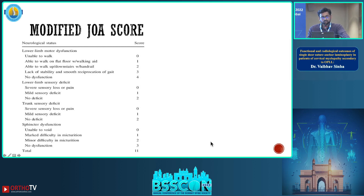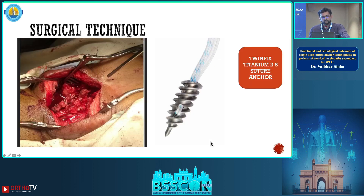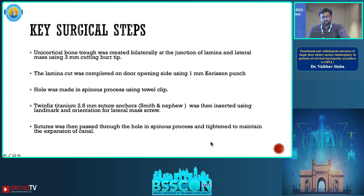In the surgical procedure, a twin fixed titanium 2.8 mm suture anchor was used to maintain canal expansion. The key surgical steps involved making a unicortical bone trough created bilaterally at the junction of the lamina and lateral mass using a 3 mm cutting burr tip. The laminar cut was opened on the door side using a 1 mm Kerrison punch, and a hole was made in the spinous process using a towel clip.